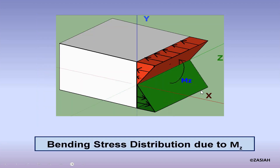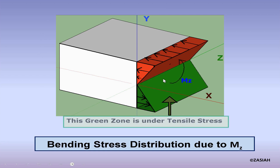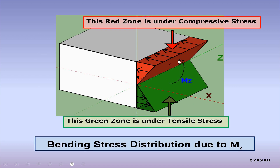Here we can see the bending stress distribution due to moment Mz. The stress is zero at the neutral axis, that is the z-axis, and the stress increases linearly from the neutral axis to either the top or bottom edge of the plane. The maximum compressive stress occurs at the top edge and the maximum tensile stress occurs at the bottom edge, as shown in this figure.